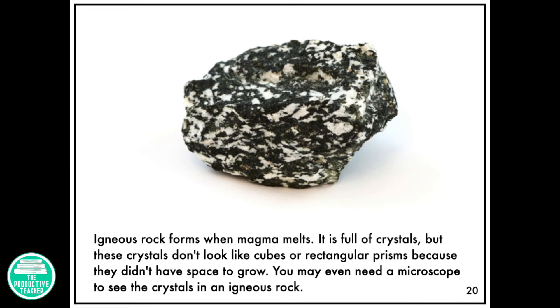Igneous rock forms when magma melts. It is full of crystals, but these crystals don't look like cubes or rectangular prisms because they didn't have space to grow. You may even need a microscope to see the crystals in an igneous rock.